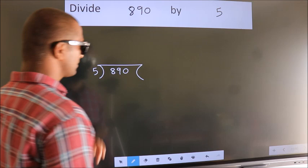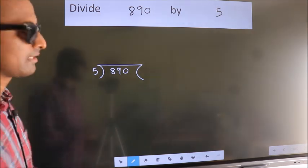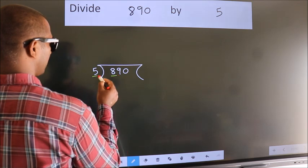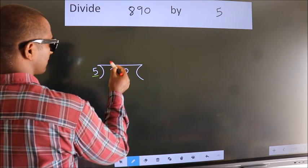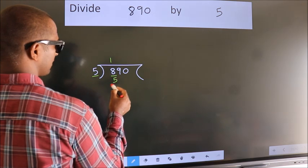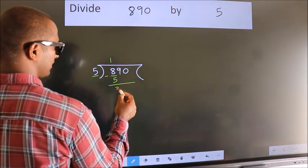This is your step 1. Next, here we have 8, here 5. A number close to 8 in the 5 table is 5 once 5. Now we should subtract. We get 3.